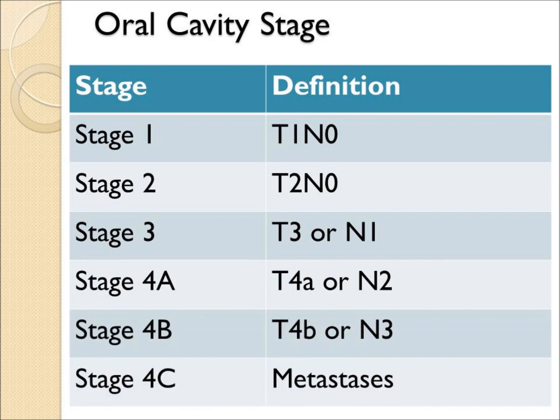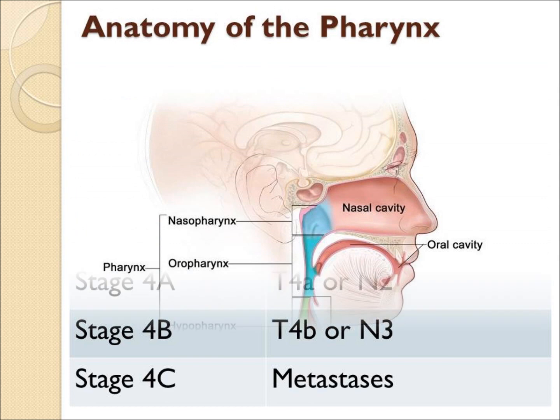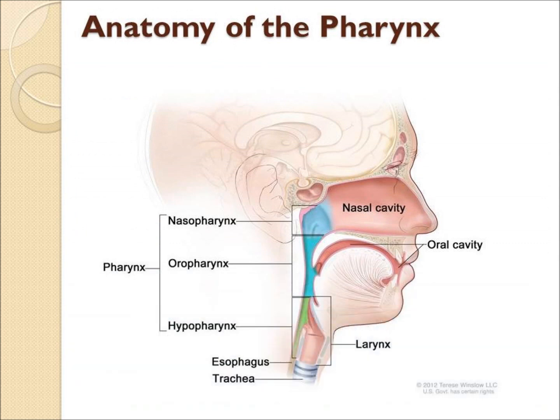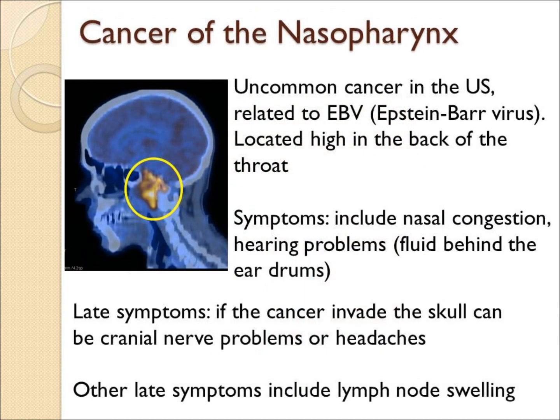Cancer of the pharynx has three different sites: upper, middle, and lower. The upper part of the pharynx, called the nasopharynx, is behind the nose. This cancer is uncommon in the United States. Symptoms include nasal congestion, hearing problems, skull pain, numbness in the face, and often lymph node swelling in the neck.